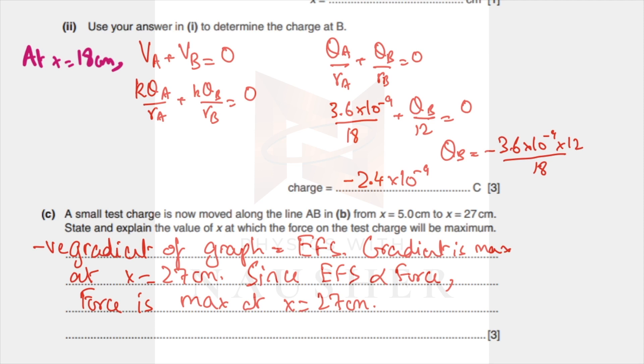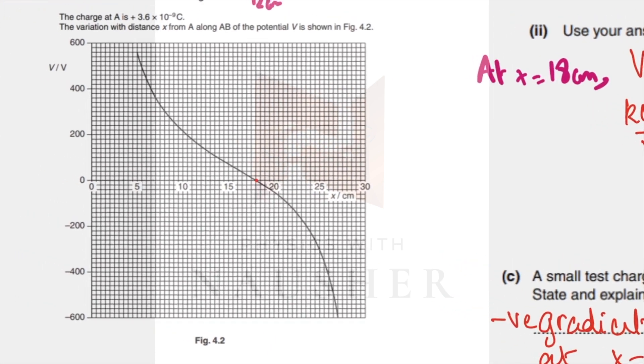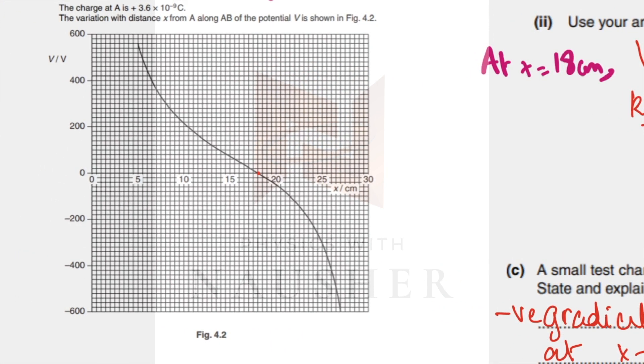A small test charge is now moved along the line AB. At which point is the force maximum? Take the potential distance graph: the gradient of this graph gives you force. So at this point versus this point, where is the line steeper? Over here. The gradient gives you electric field strength, and electric field strength is proportional to force. So for force to be maximum, the gradient must be maximum. Therefore the answer is x equals 27 centimeters.